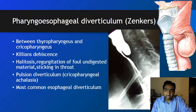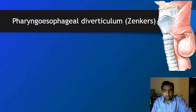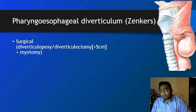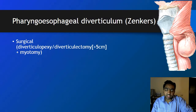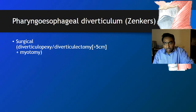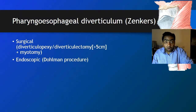Treatment can be either surgical, including diverticulopexy or diverticulectomy. In cases of larger diverticulum, the diverticulum is excised if more than 5 cm. In all cases, if myotomy is not performed on the cricopharyngeus muscle, the diverticulum will recur. Therefore, cricopharyngeal myotomy is performed to decrease the tone of the cricopharyngeus muscle, done in conjunction with diverticulectomy or diverticulopexy.